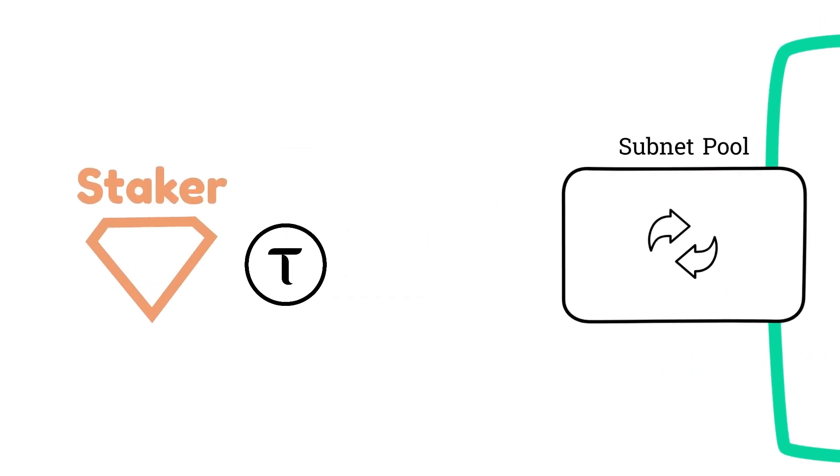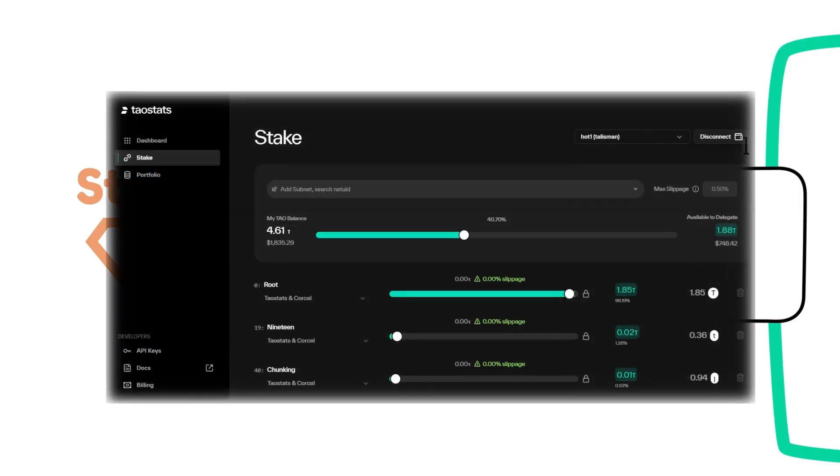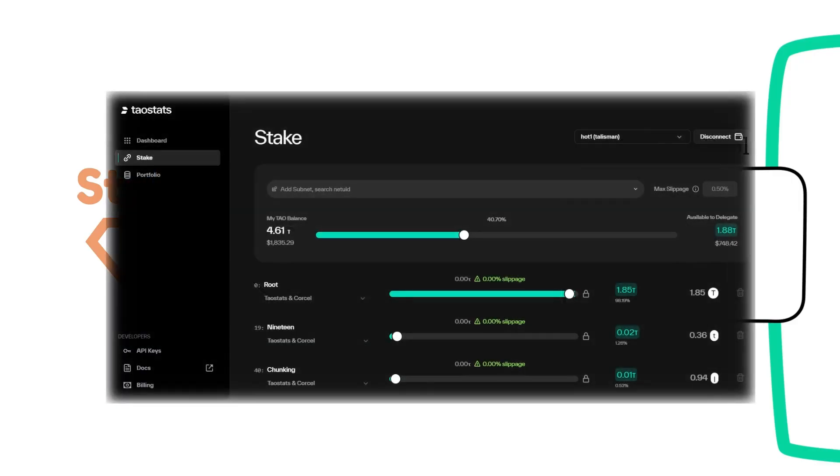Alpha for a subnet is purchased via its subnet pool. Subnet pools are essentially a decentralized exchange, where Tau is the base token used for purchasing alpha. See our subnet pools video for more information about how subnet pools work. You can easily stake through taustats.io, link in the description.